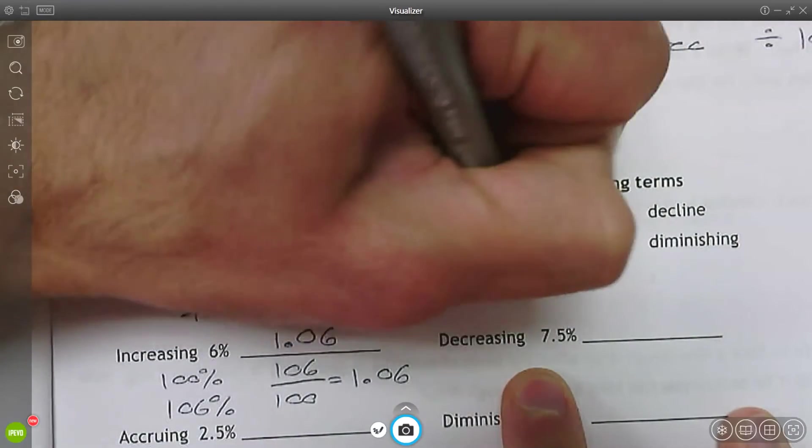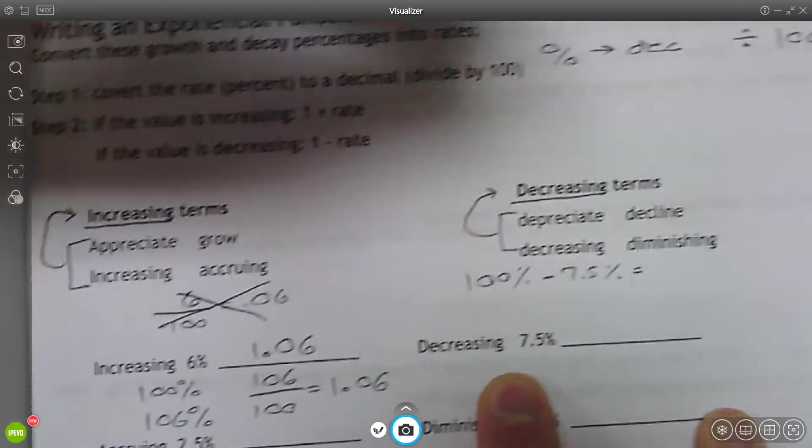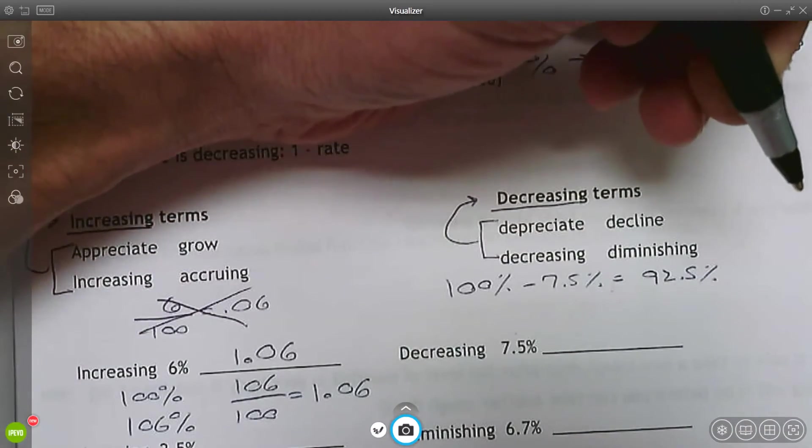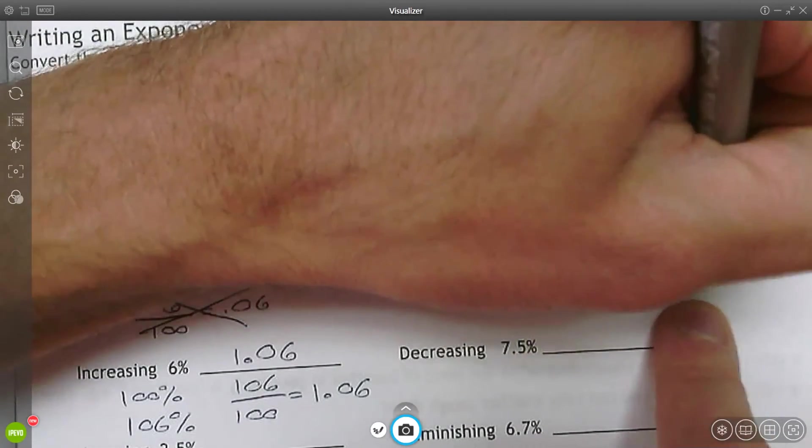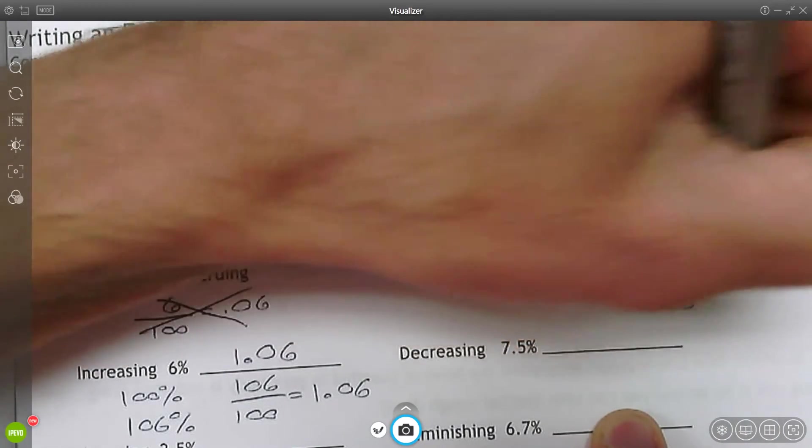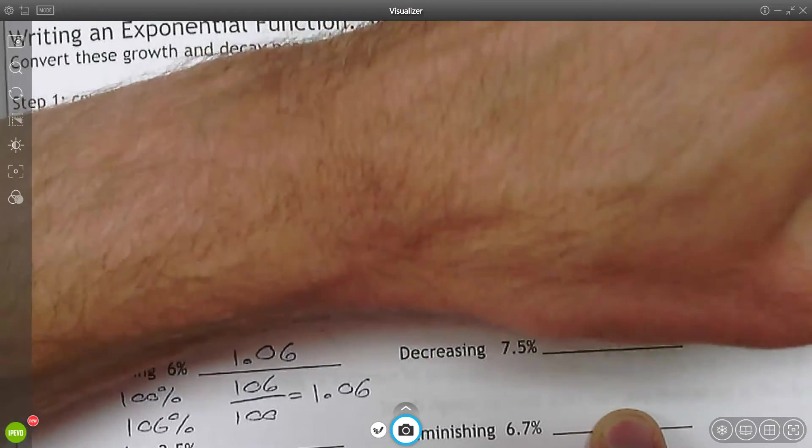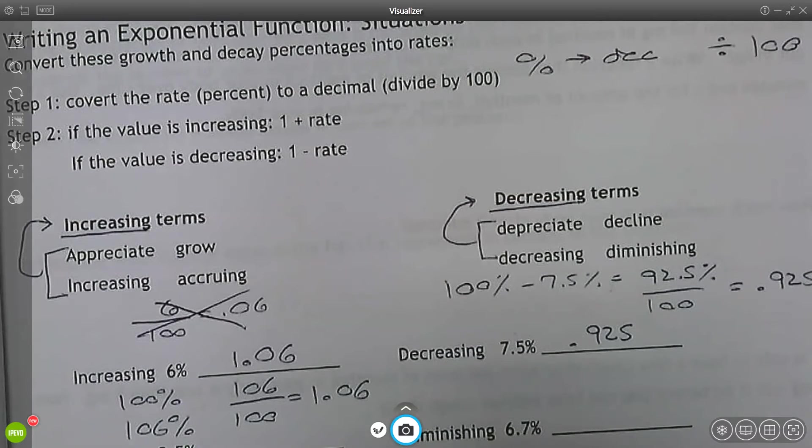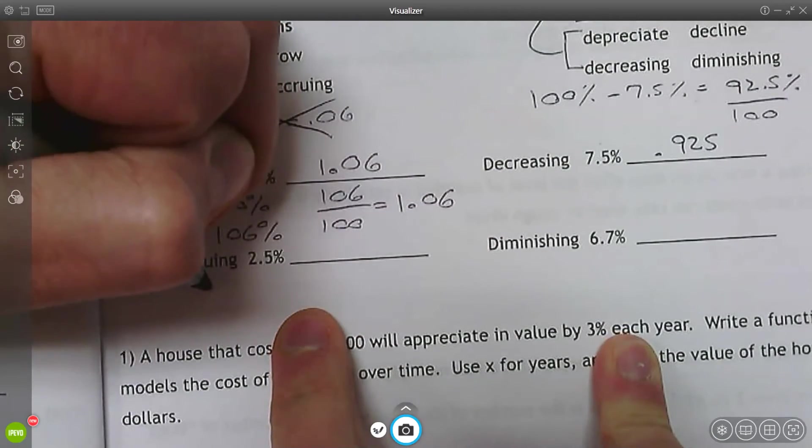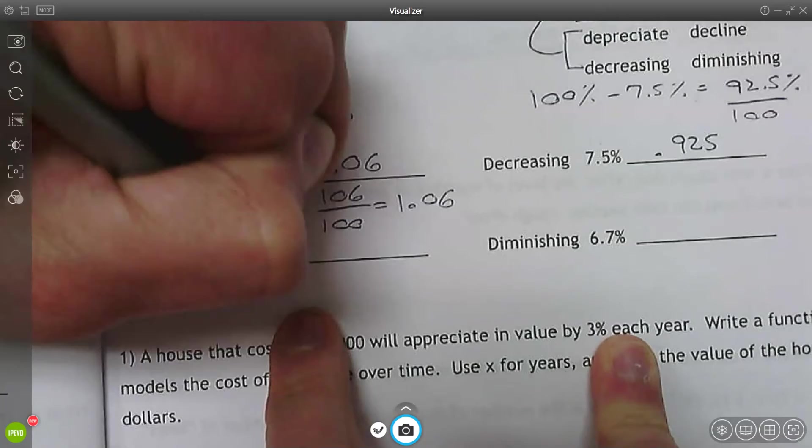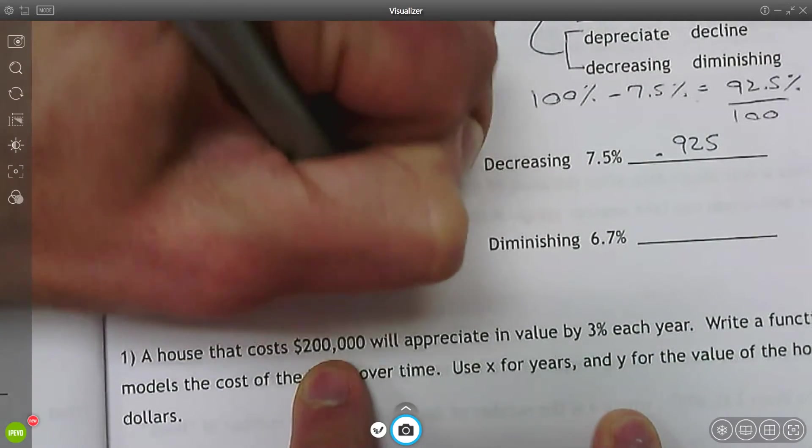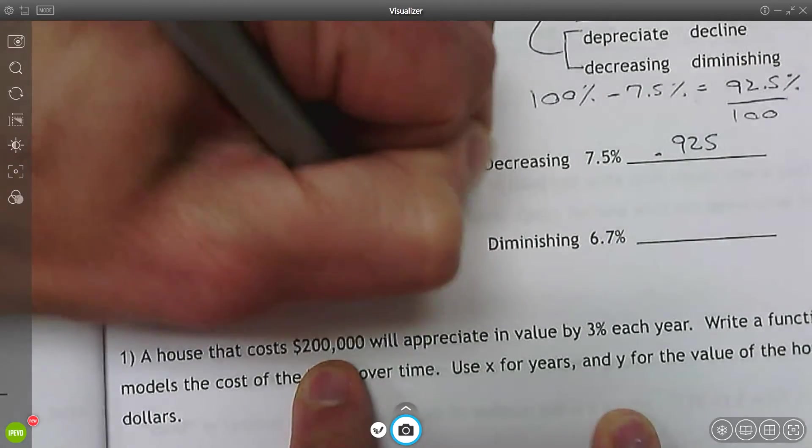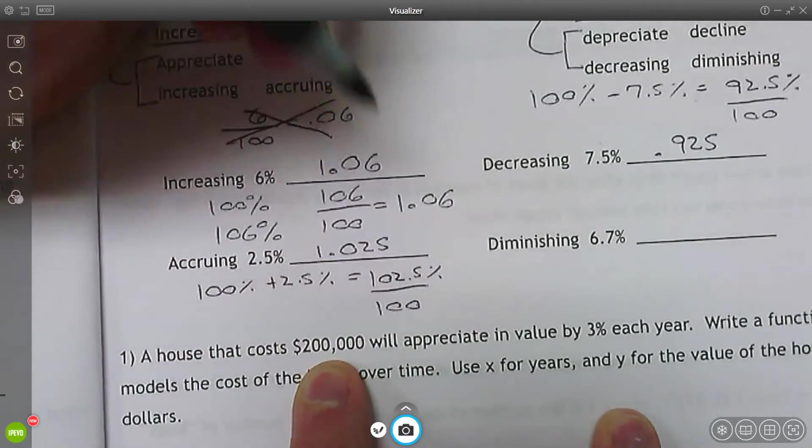If I decrease by 7.5%, starting at 100% minus 7.5%, now I'm at 92.5%. Now I'm going to convert this percent. I know it has a decimal in it, but this is still a percentage. I'm going to divide by 100. And that's 0.925. So that would be our decay, that would be the base. Accruing by 2.5%. So accruing is going up. So if I take that 100% plus the 2.5%, now I'm at 102.5%. And I'm going to convert that to a decimal, divide by 100. So 1.025 would be the base.